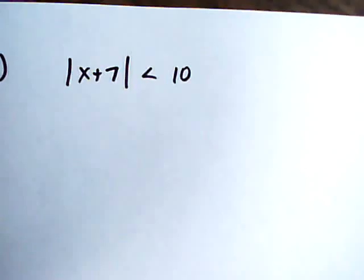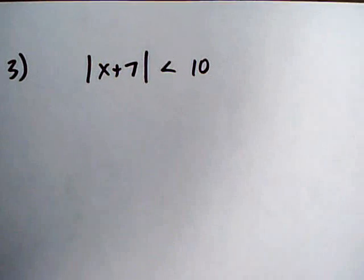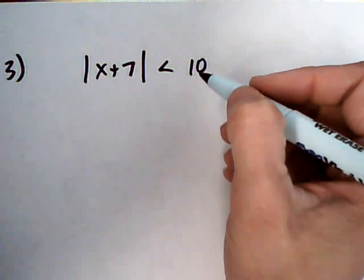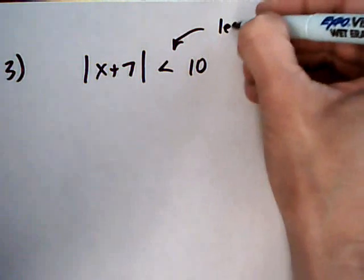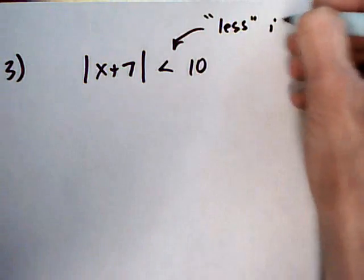And the third one is another inequality, but now we have a less than instead of a greater than. For the greater than's, we do more is or. For the less than's, we do less is nest.